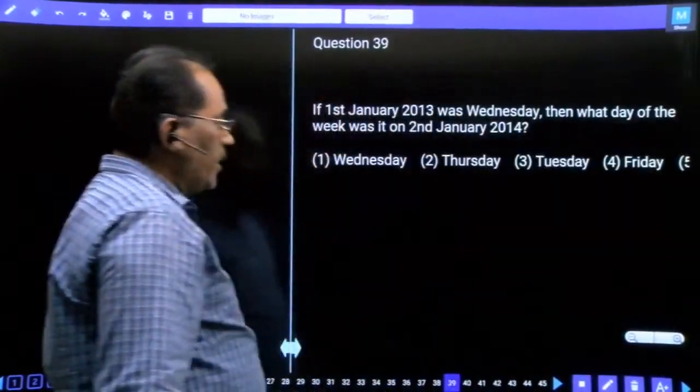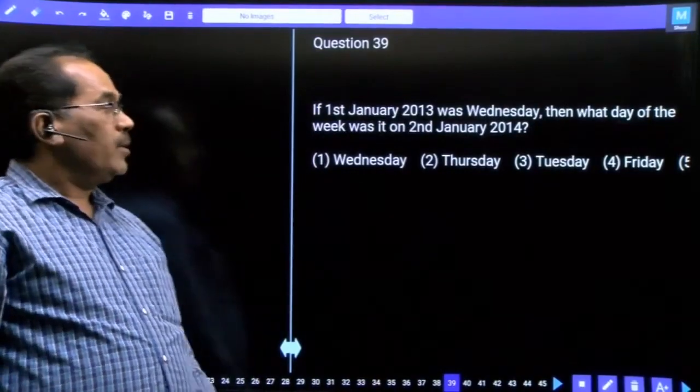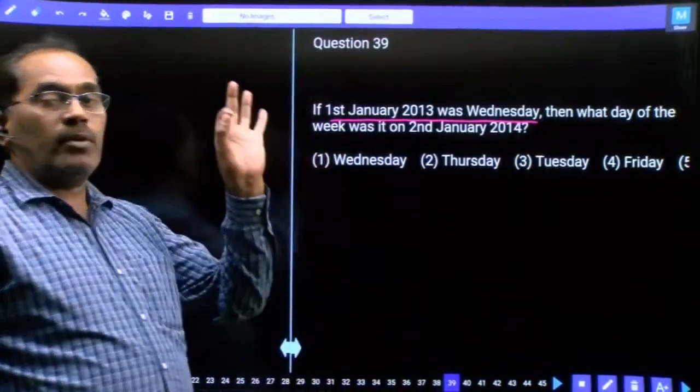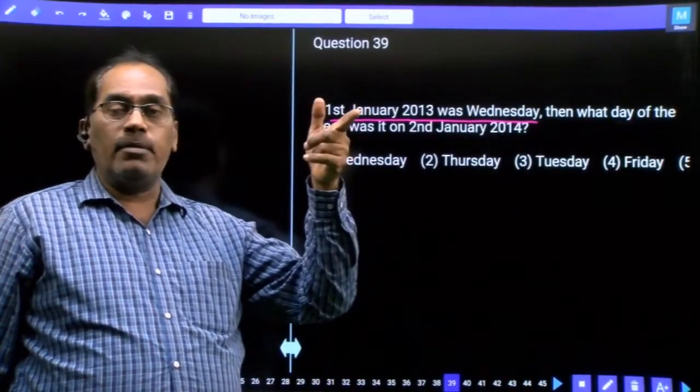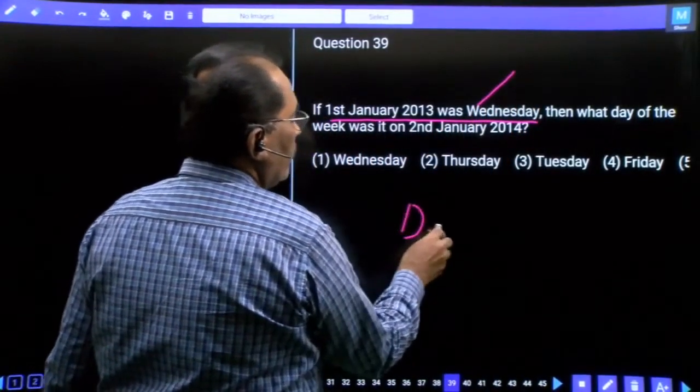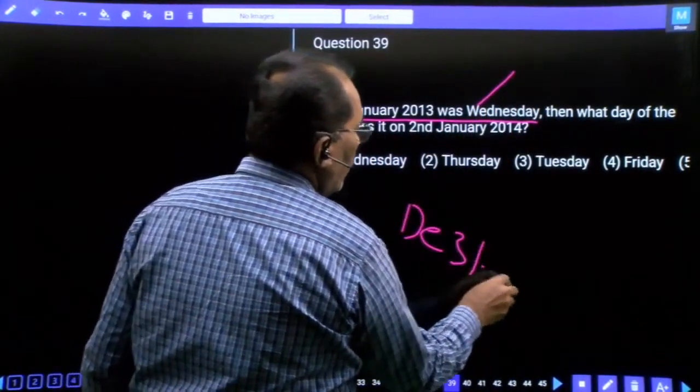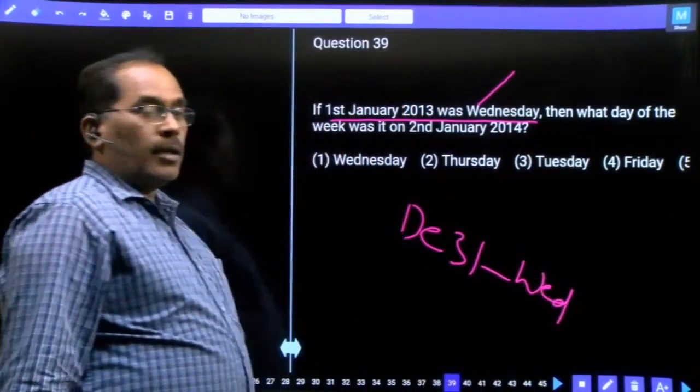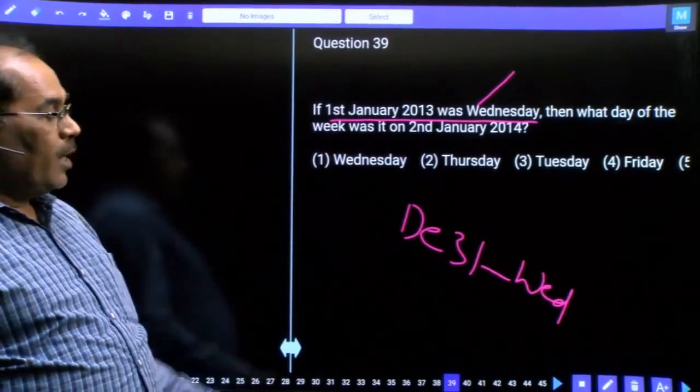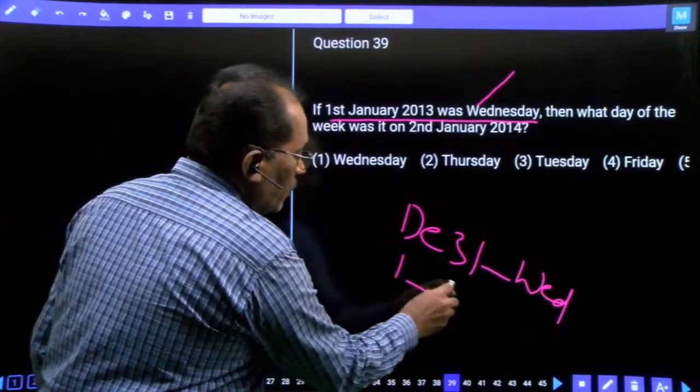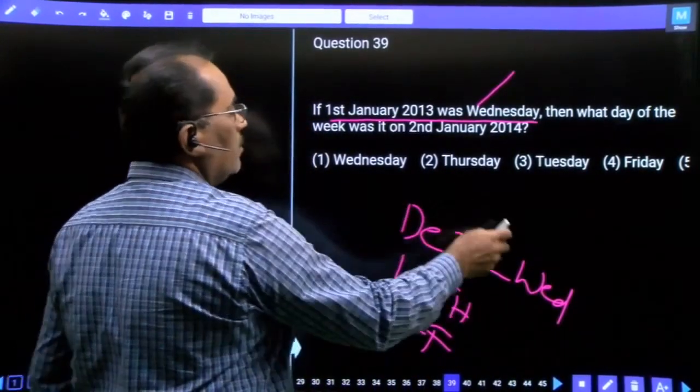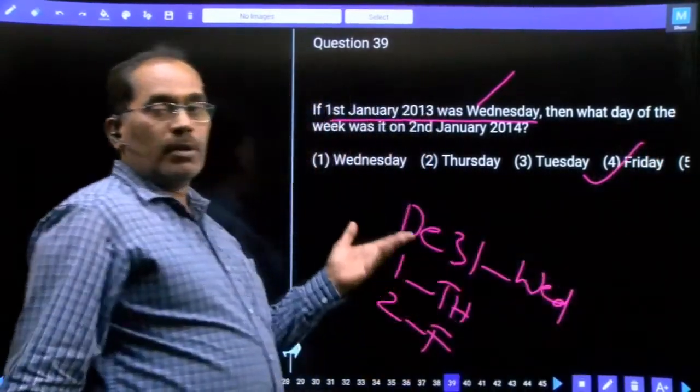Question 39, this is a calendar based question. 2013, 1st January 2013 was which day? We need to calculate February 2013. The answer involves checking the calendar for that year.